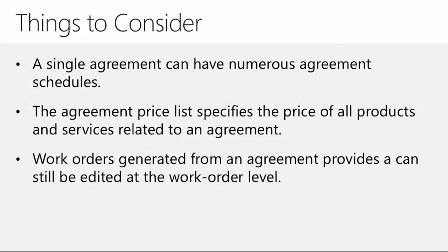A couple of final things to think about when talking about agreements. Remember that you don't have to have one singular schedule associated with an agreement — you can have multiple. So you could have one schedule set up for weekly options and one set up for bi-monthly options. That's the whole point of agreements: to make sure you have enough flexibility to schedule and create multiple work orders in multiple situations. Also remember that an agreement has a price list associated with it that specifies the price for every single product and service on that agreement.